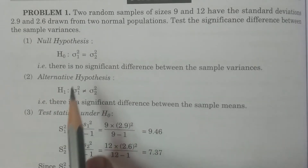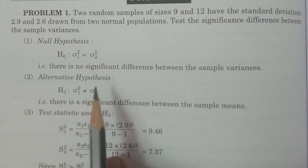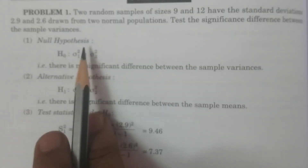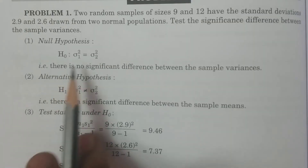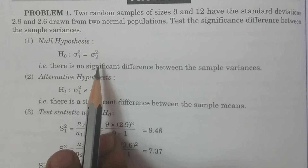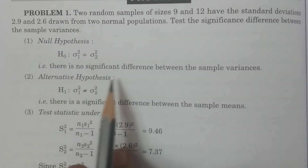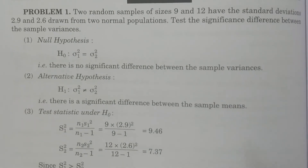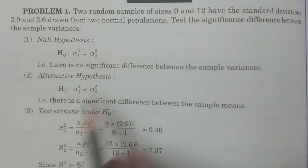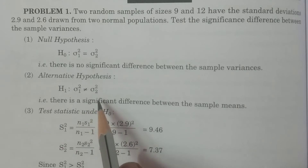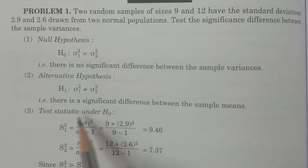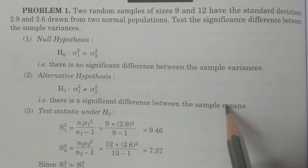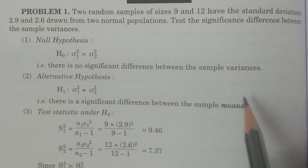Now we apply the four-step procedure. First, the null hypothesis H₀: σ₁² = σ₂² — that is, there is no significant difference between the sample variances. The alternative hypothesis H1: σ₁² ≠ σ₂² — that is, there is a significant difference between the sample variances.